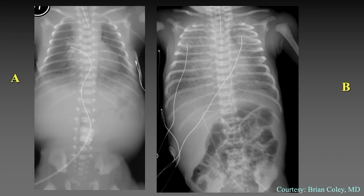UV catheter malposition is common in patients with abnormal anatomy. Patient A has an atrioventricular canal and the UV catheter tip has coursed through the intracardiac defects to reach the right superior pulmonary vein. In patient B, the UV catheter has entered the left portal vein and the tip is in the vertical vein of a total anomalous pulmonary vein with infradiaphragmatic connection to the portal system.